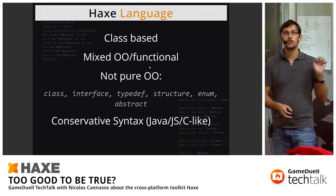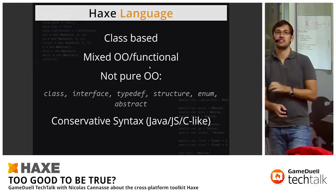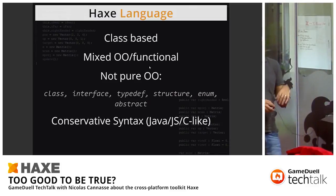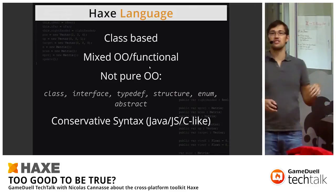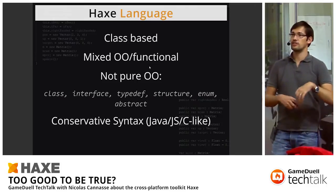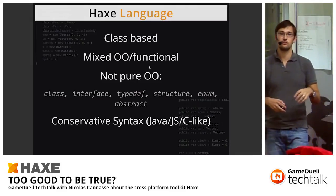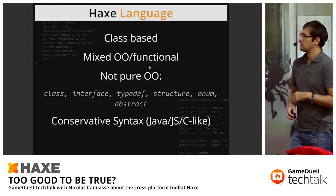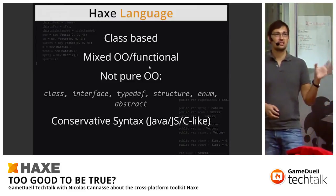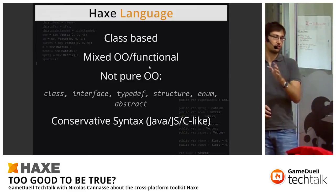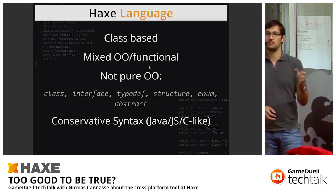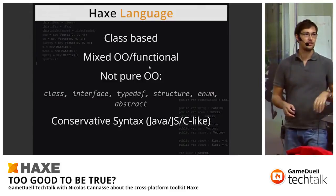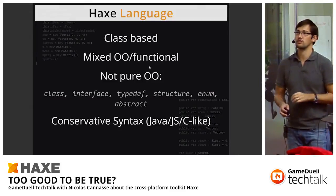Haxe has a very conservative syntax. It's not an alien syntax you'd need to learn from scratch — it keeps things familiar, like Java, JavaScript, or C. Curly braces — it's enough, it works.